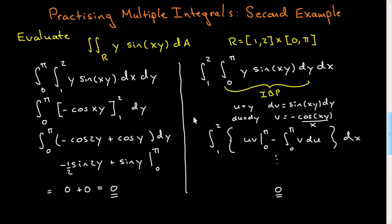The message is that the order of integration matters, and it will matter even more when we consider general (non-rectangular) regions. You simply have to work through a number of examples to build up intuition — look before you start at what might be the easier integral to do first. Sometimes it's tricky and it might seem like you should go one way, but in fact you should go the other. If you start and it looks bad, jump to the other order. It's really just a question of trying different problems until you get some insight.